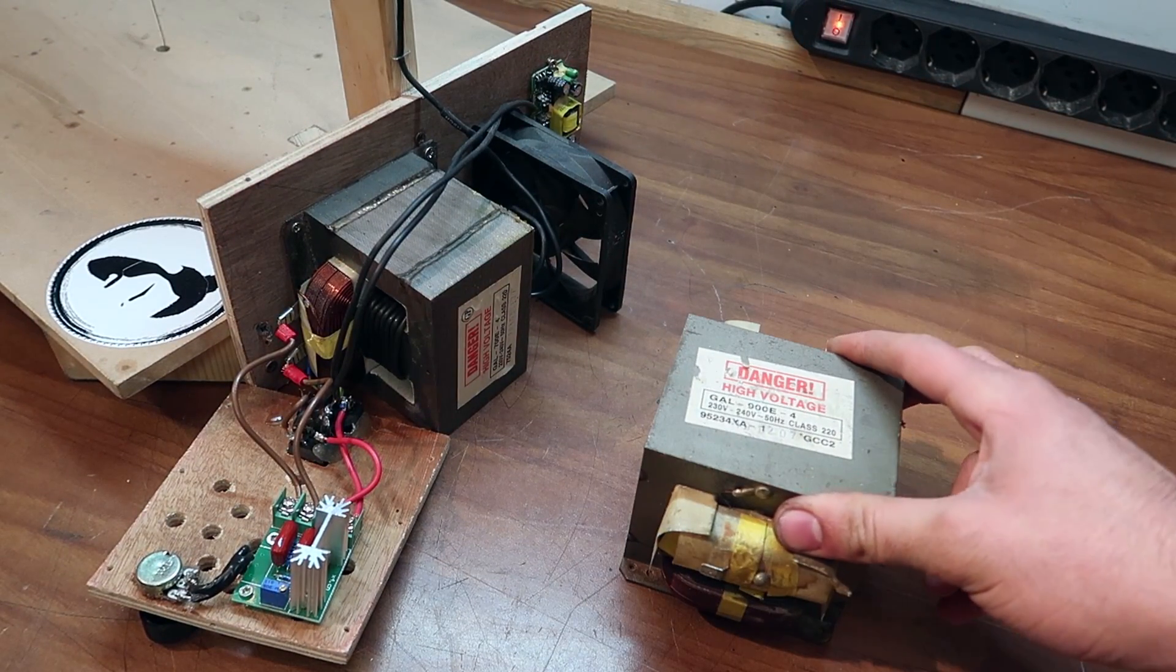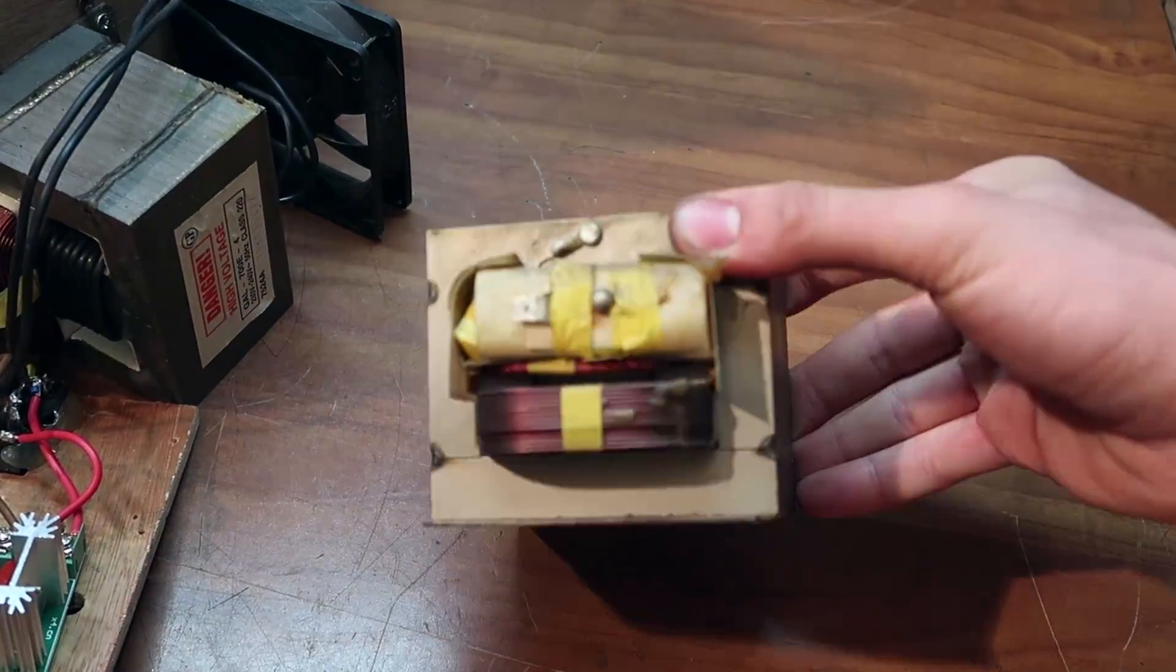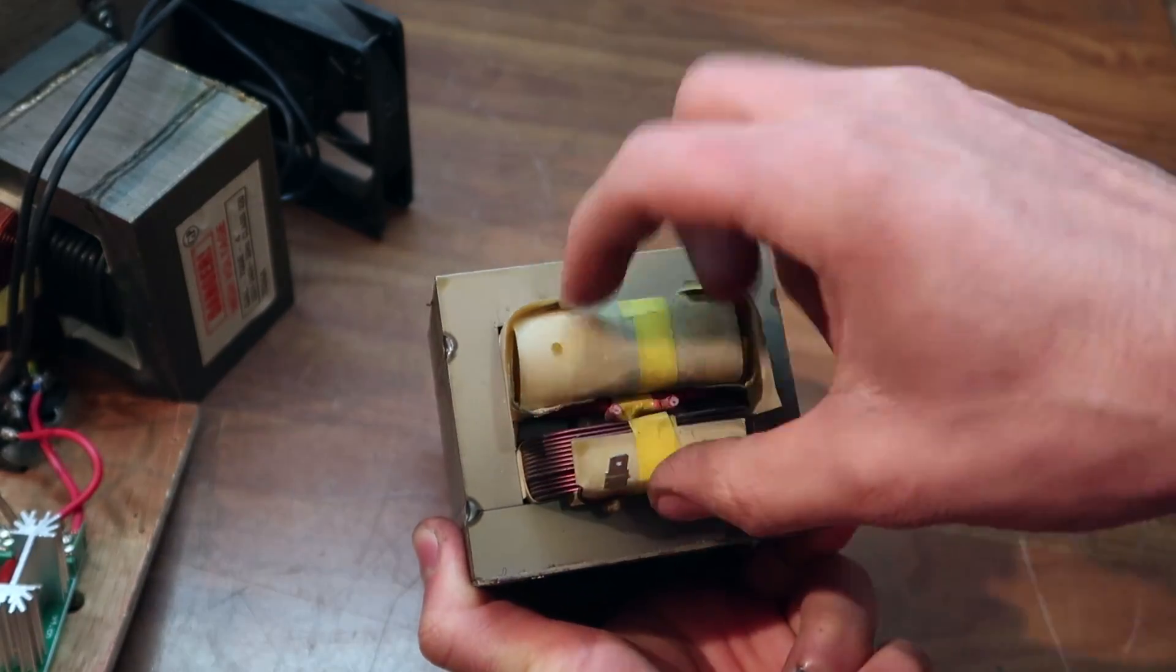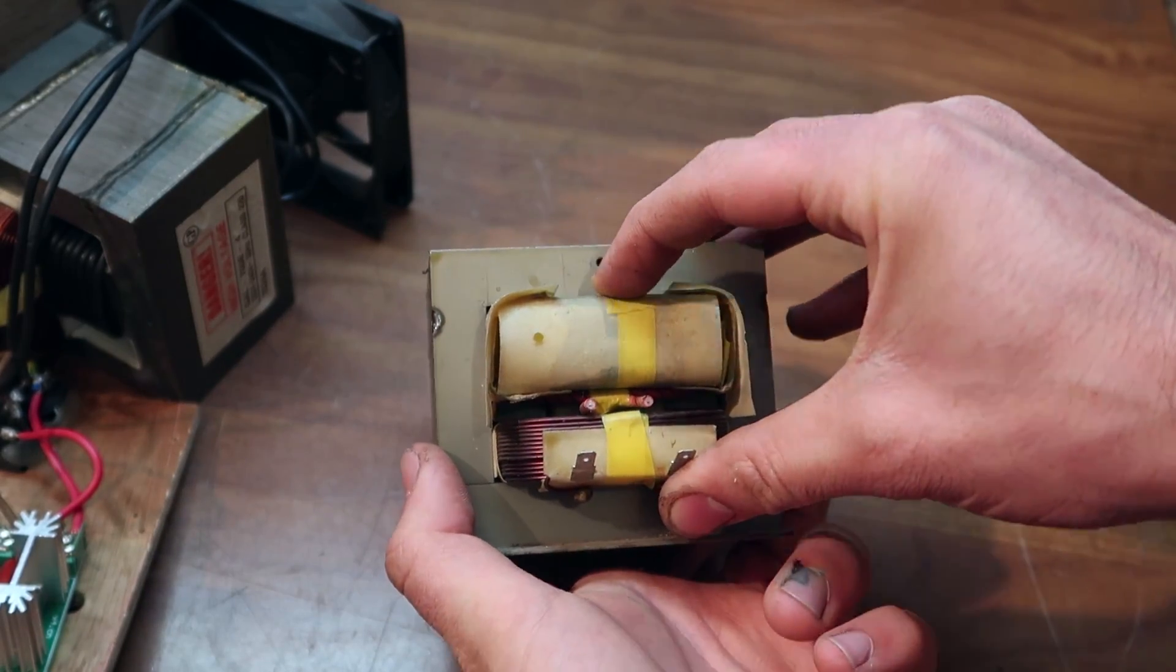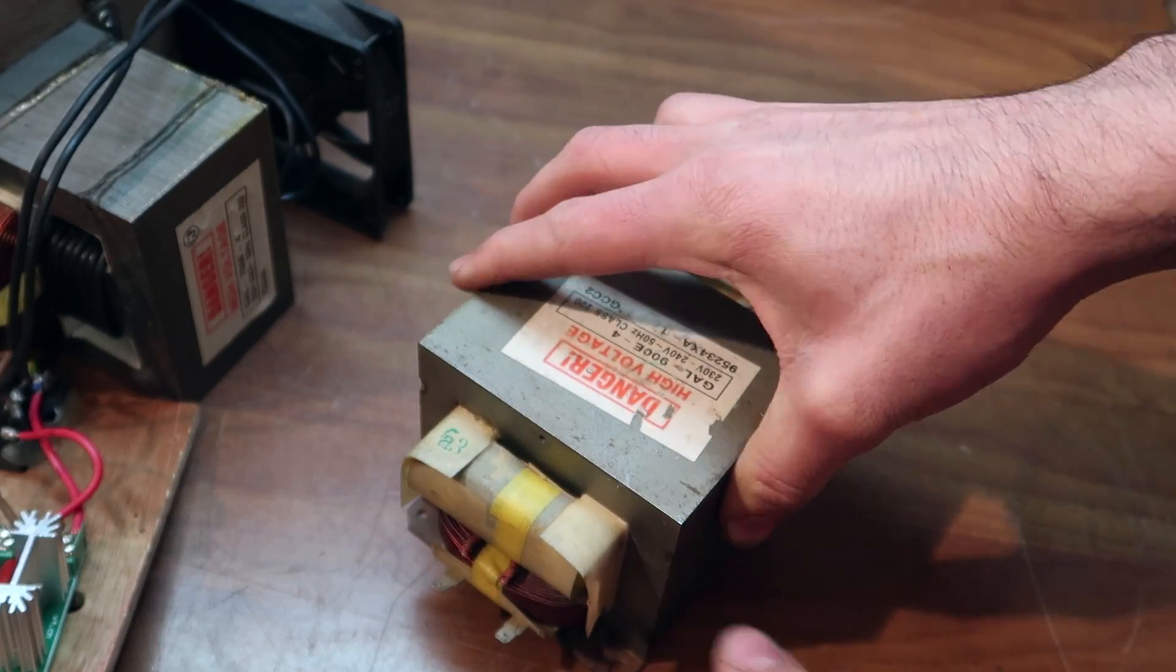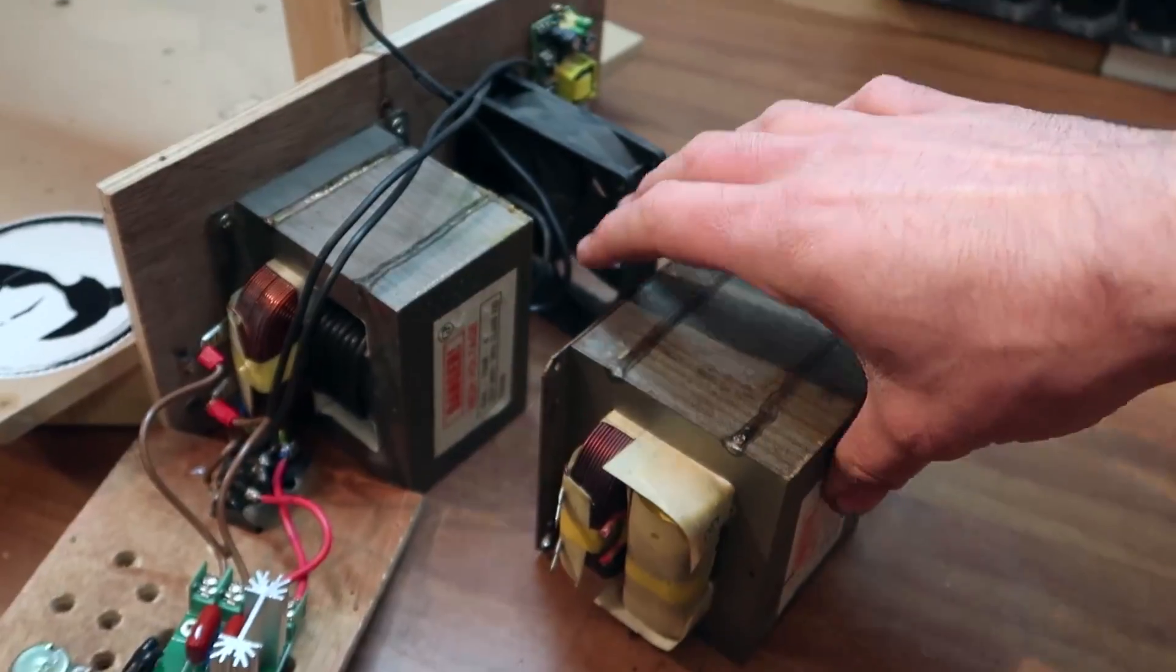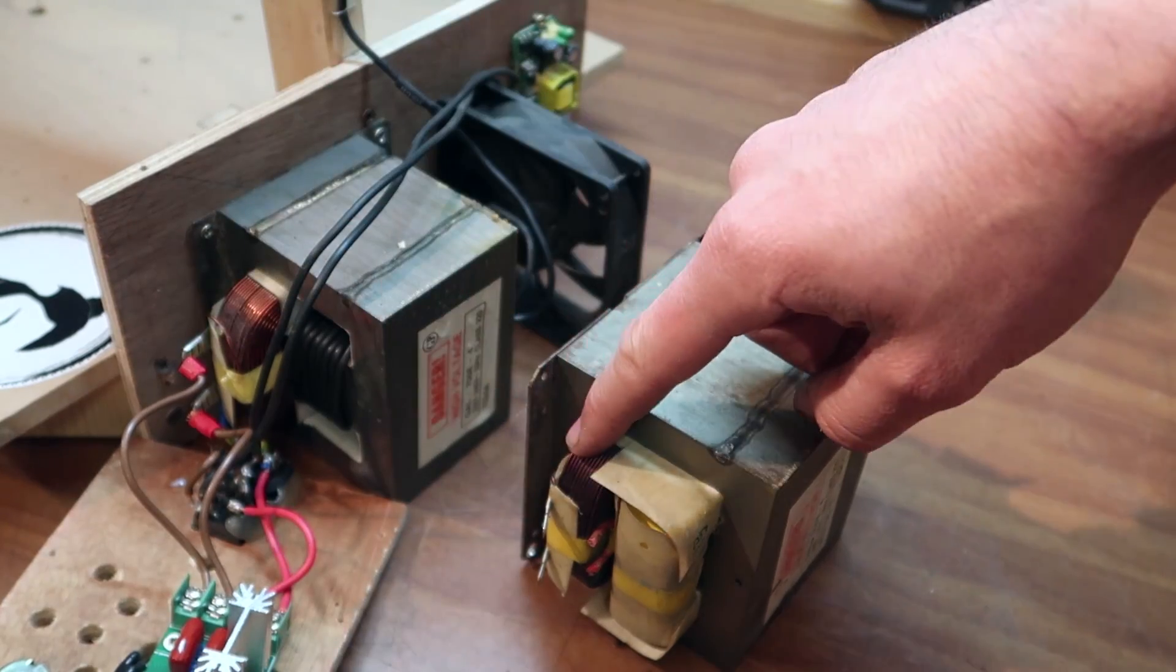This is an original microwave transformer. Here you can see better both the primary winding that connects to the main voltage and the secondary winding. To remove the secondary winding you can cut both ends with a metal saw. But you have to be very careful to not damage the primary winding or the metal cage of the transformer.